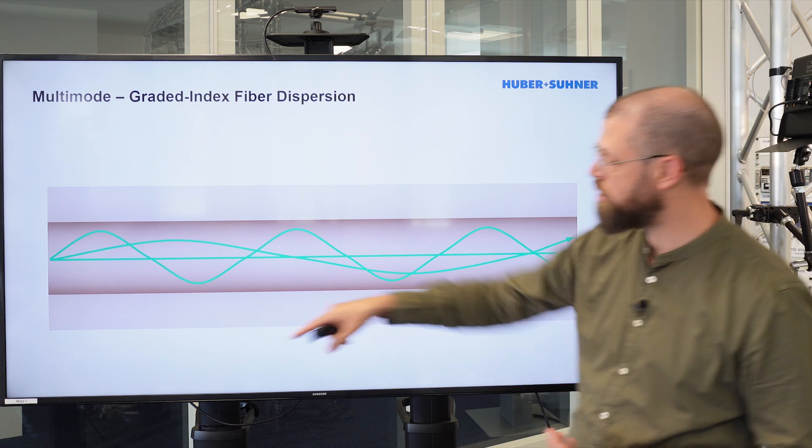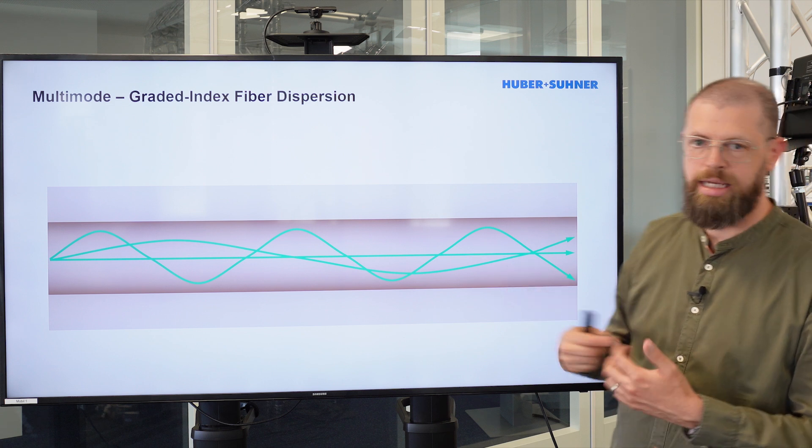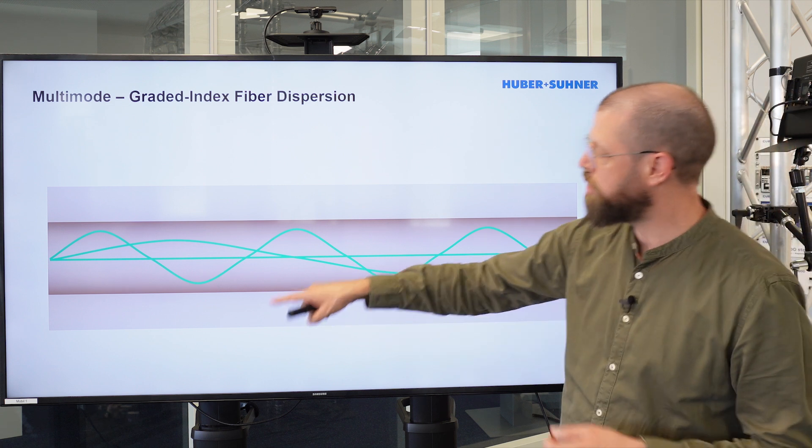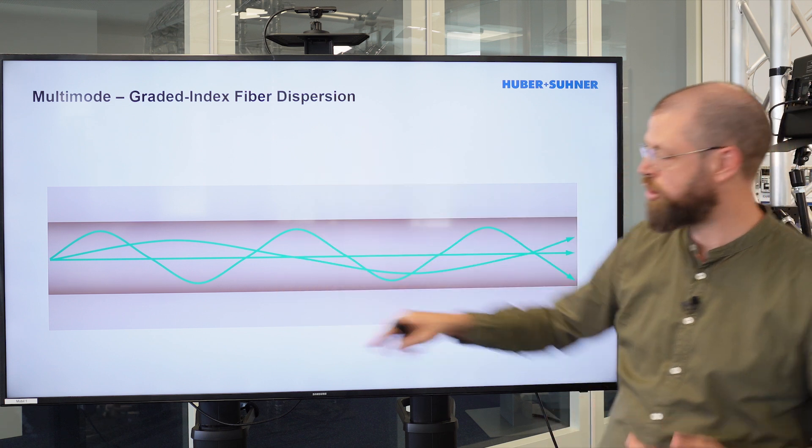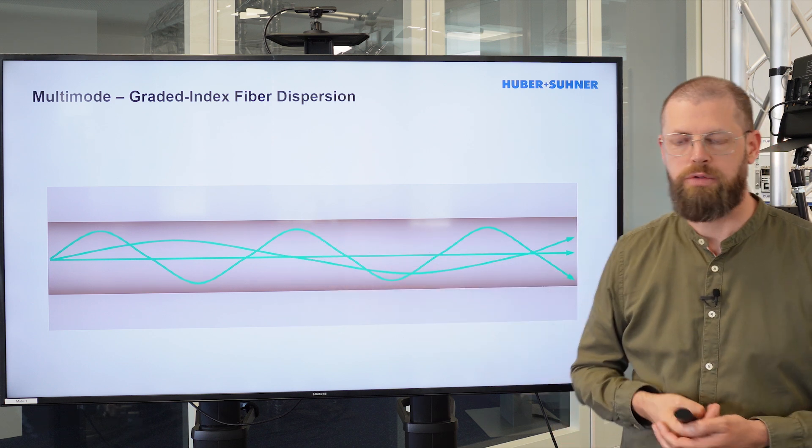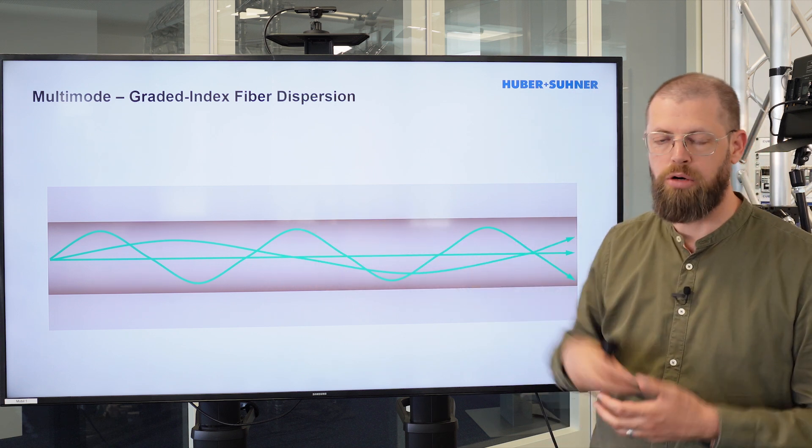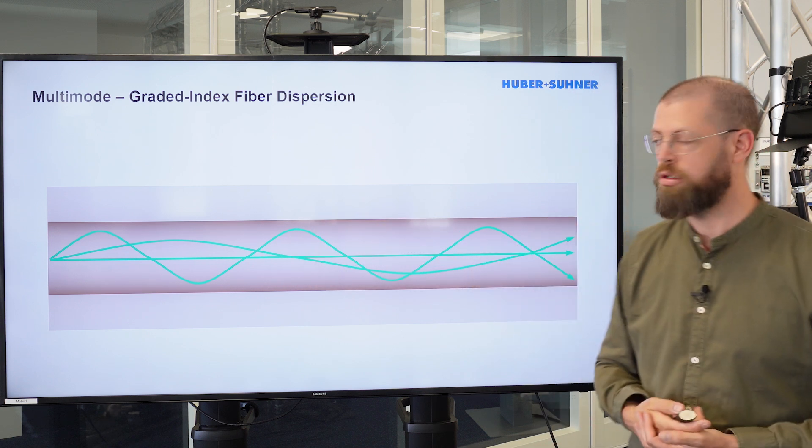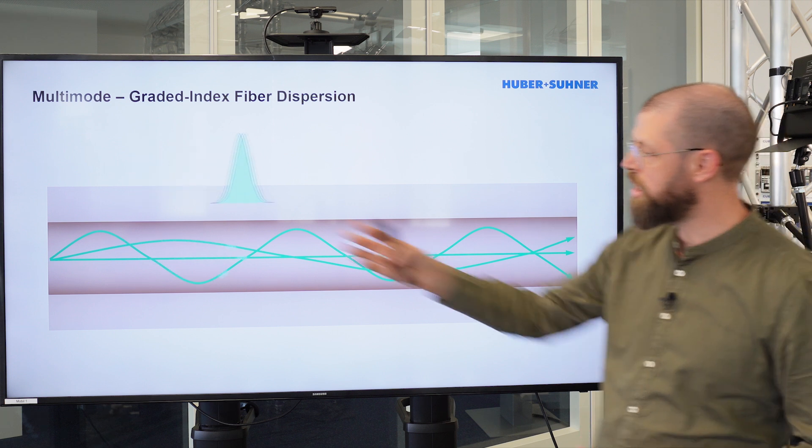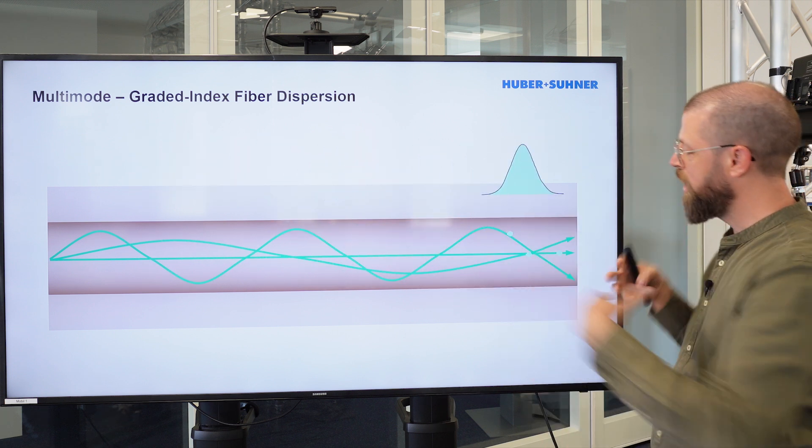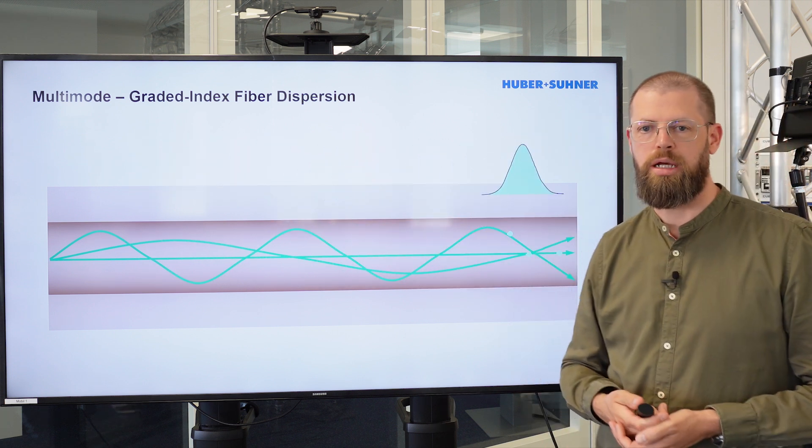The other effect is because we've got this graded index of the fiber core, we don't have the hard total reflection, but instead the slightly curved reflection, meaning that the longer distances, the higher modes, the distance is also shortened. And the result is that the dispersion is reduced quite drastically.